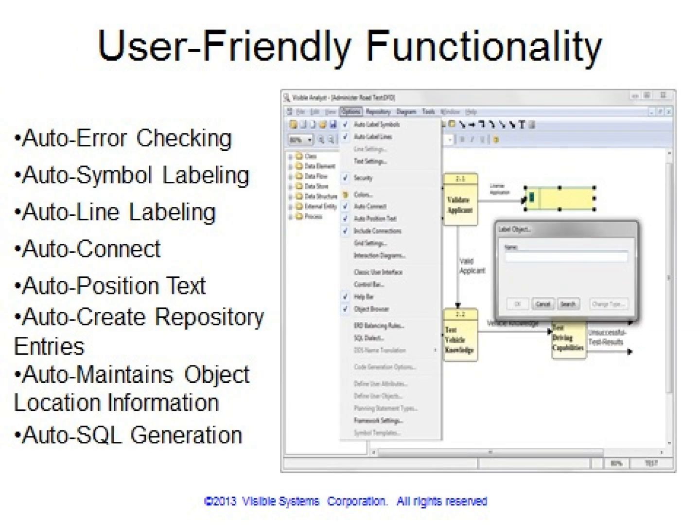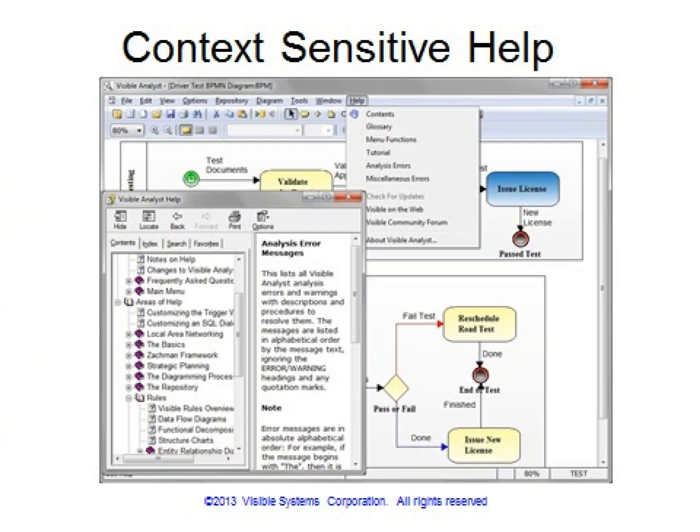Many automatic, customizable functions are provided. These auto functions assist the analysts, modelers, and developers when drawing the models and populating the repository. The Visible Analyst context-sensitive help explains all of the menus, dialog boxes, and repository fields, as well as the diagram and repository analysis error and warning messages.